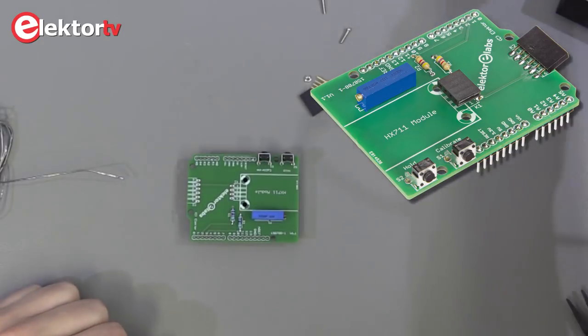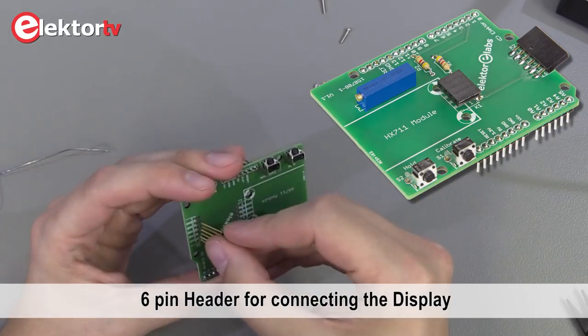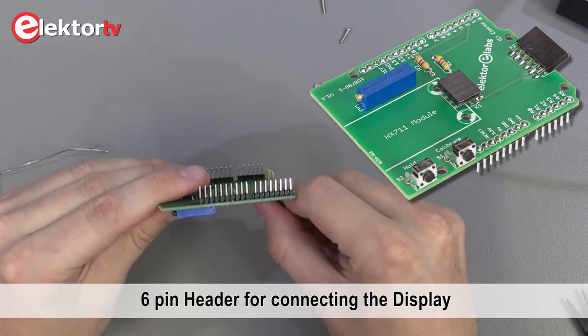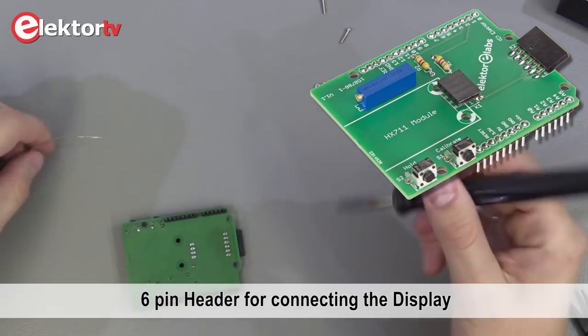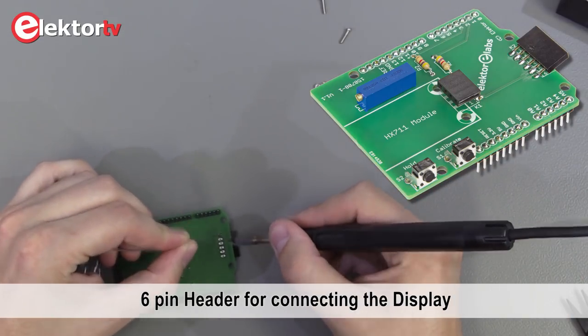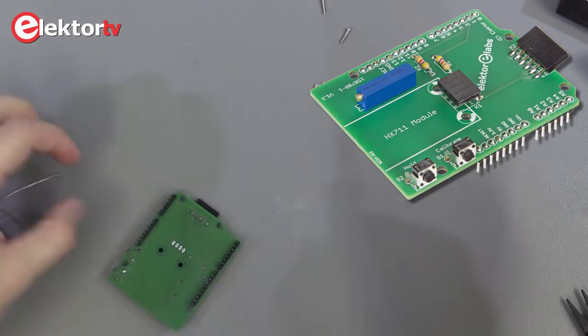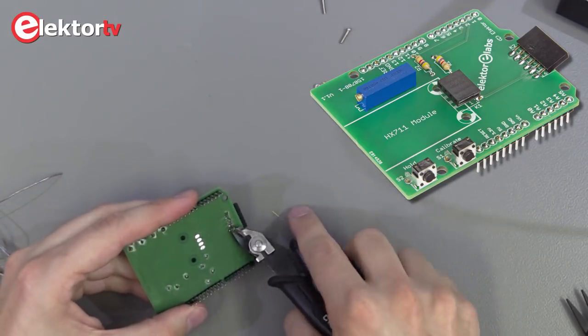Next is this six pin header. Because it has to be at a 90 degree angle, we bend it like this. We solder all three at once.